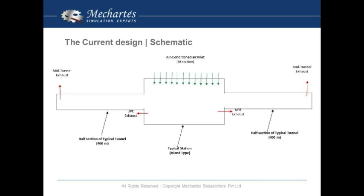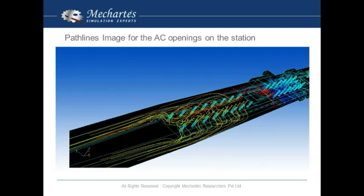We modeled the station along with half a tunnel on each side to represent the complete system. First, using Fluent, we did the path line and temperature simulation of the existing ventilation and cooling system to see how the flow is inside the station and the tunnel.